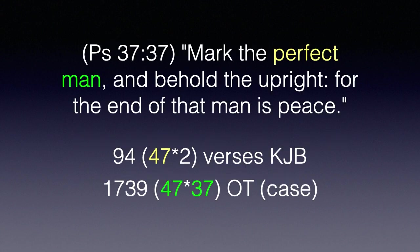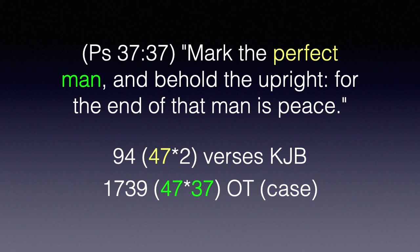Let's go to a place in the Bible where the word 'perfect' occurs — Psalm 37:37: 'Mark the perfect man, and behold the upright, for the end of that man is peace.' The word 'mark' occurs 37 times in the King James Bible. The word 'perfect' occurs in 94 verses — a multiple of 47. The word 'man', case sensitive as found in this psalm in the Old Testament, occurs 1,739 times. There was only one perfect man who ever walked this earth, and that was Jesus Christ. He was without blemish.